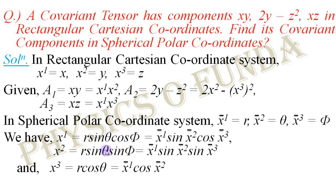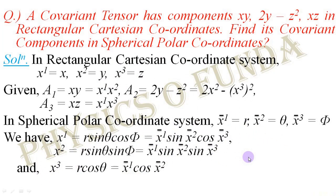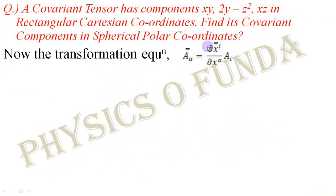With this consideration, we get x1 means x. Using the relationship between rectangular Cartesian and spherical polar coordinates: x equals r sin theta cos phi. In barred and unbarred notation this becomes x1 equals x1-bar sin x2-bar cos x3-bar. Accordingly the other components x2 and x3 are written similarly. The transformation equation for a covariant vector is: a-bar alpha equals del xi over del x-bar alpha times a-i, where alpha is the free index and i is the dummy index, with summation done over i.